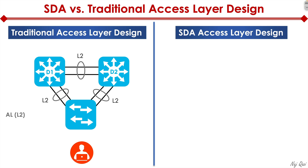Access layer switches operate at Layer 2, and distribution layer switches at the uplink level will most likely be Layer 3, but down below to the access layer they are all purely Layer 2.